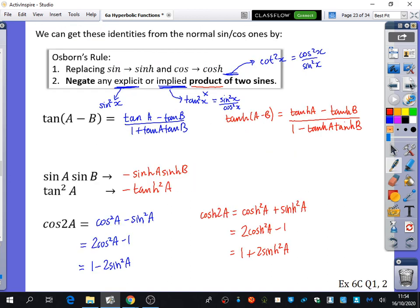So it will depend on the context of the question of what you need to do. If they say prove using the definitions, you need to prove using the definitions. If just within the question, you need an identity quickly to get something to happen, you create that identity from knowing the trigonometric one off by heart and using Osborn's rule to translate it across.